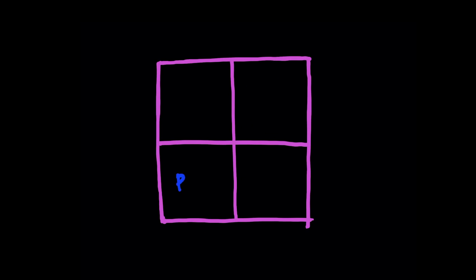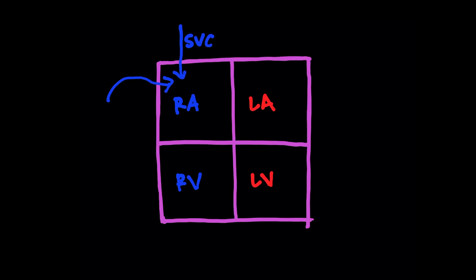Here's the heart. You have your right ventricle and your right atrium on the right side, and then you have your left ventricle and your left atrium on the left side. What drains into the right atrium is your IVC, your inferior vena cava, and your SVC, your superior vena cava, and that brings all the deoxygenated blood back to your heart.